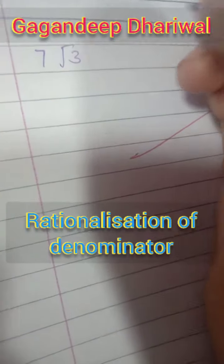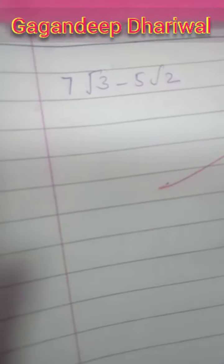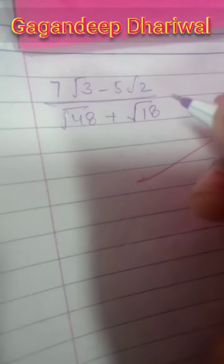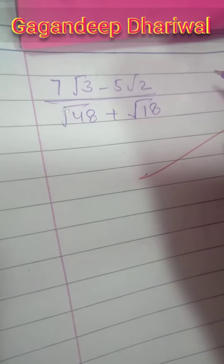Now see, here is the question which you have to rationalize. The question is 7√3 - 5√2 divided by √48 + √18. For rationalizing the denominator, we have to multiply this with its conjugate, but first we have to simplify this.